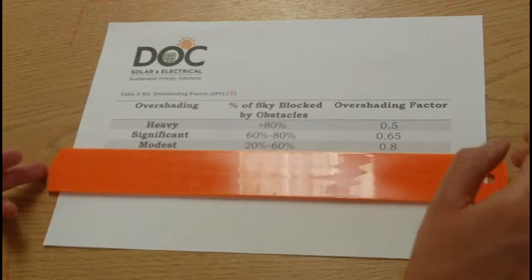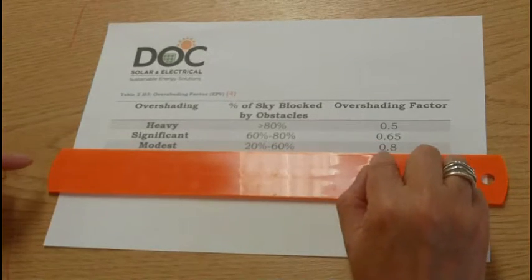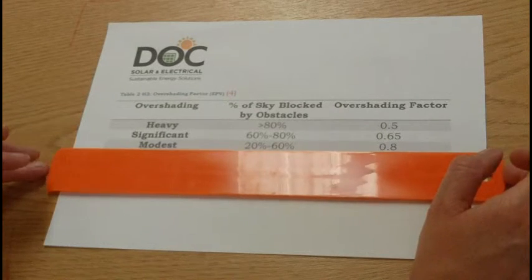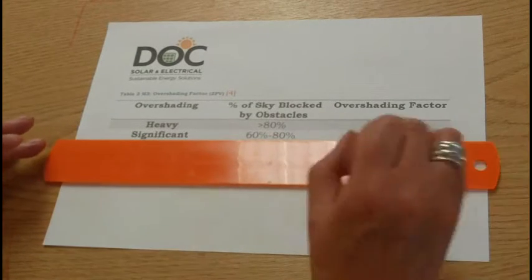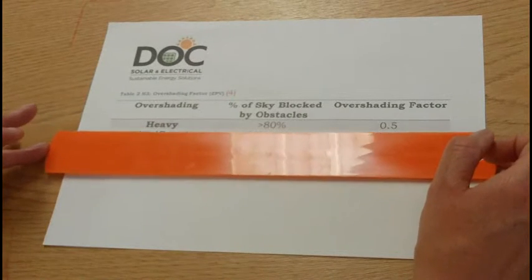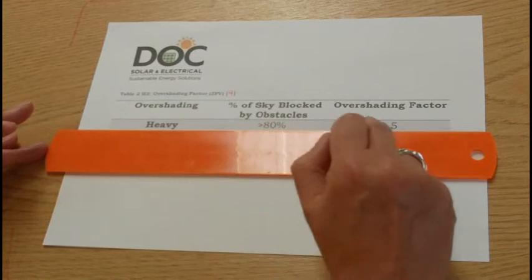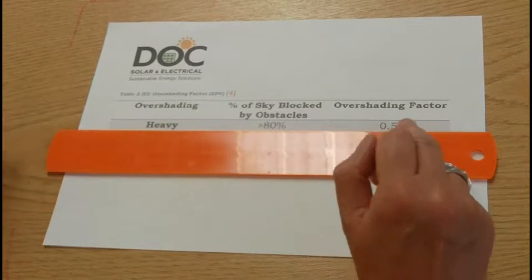If you have modest overshading between 20 and 60%, you'd apply an overshading factor of 0.8. Significant shading between 60 and 80%, an overshading factor of 0.65. And heavy shading would reduce your calculation by 50%, so anything over 80%, you'd apply an overshading factor of 0.5.